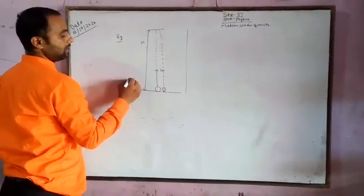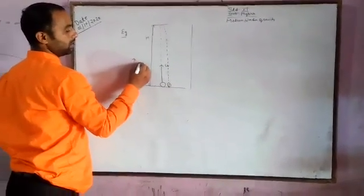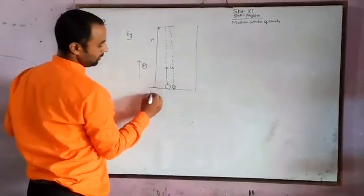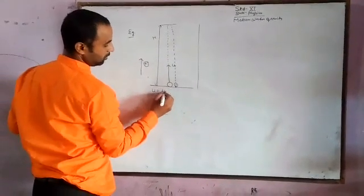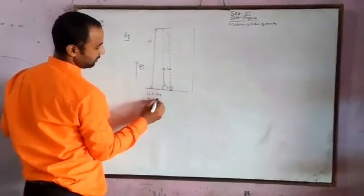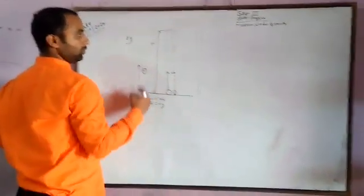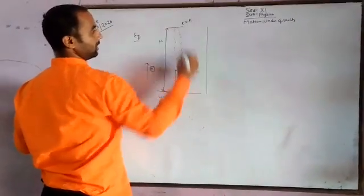First we have to use the convention: if upward direction is taken as positive, so u should be positive, u should be plus u, acceleration is minus g. So we have to use the equation at time t equal to t, the ball is here.